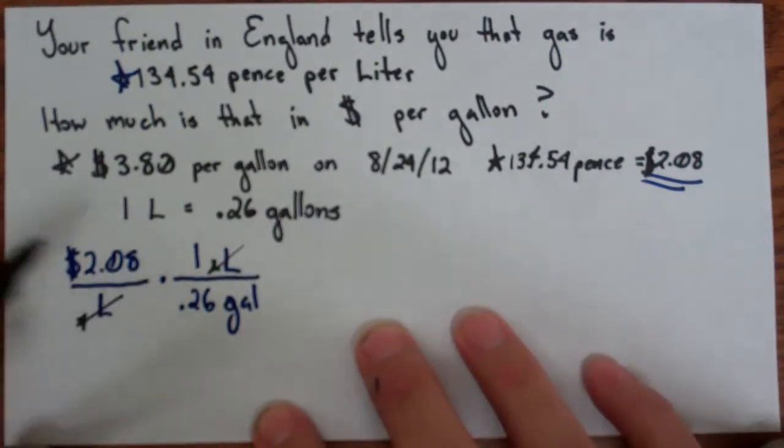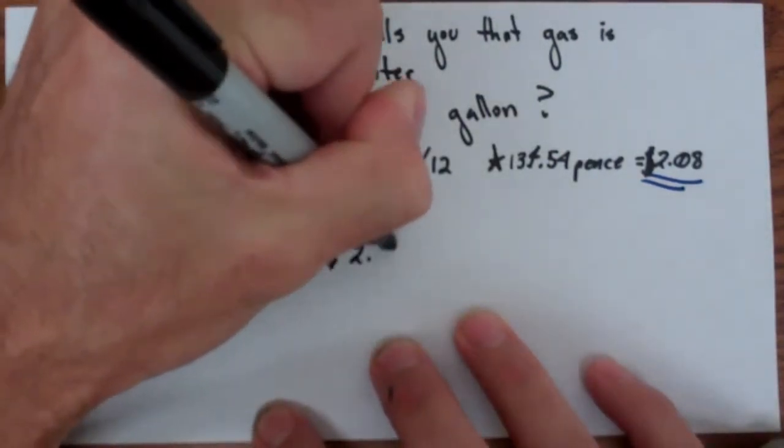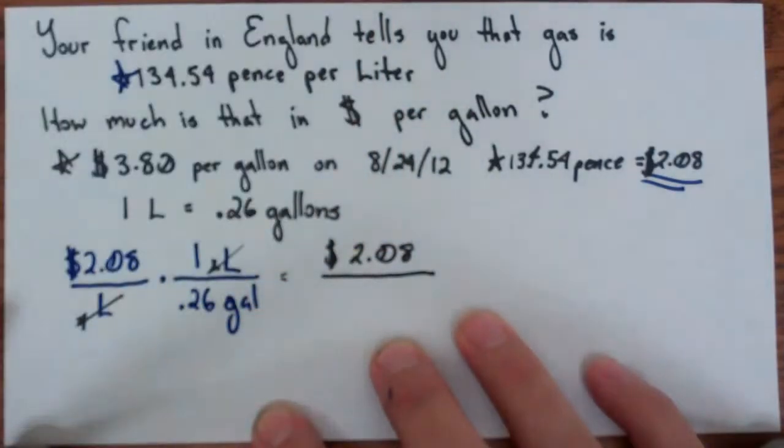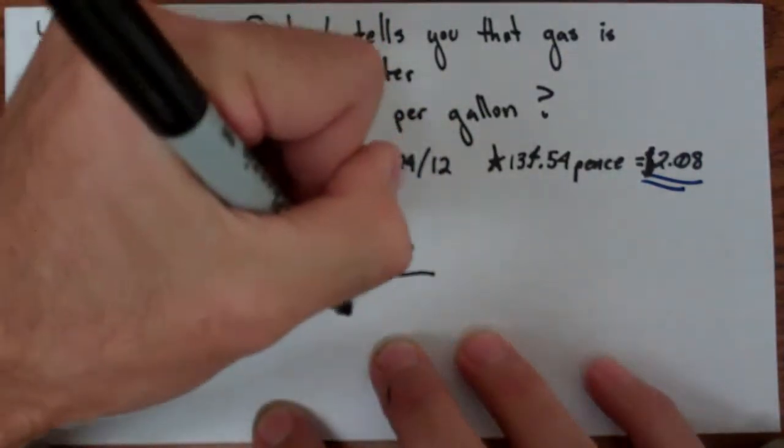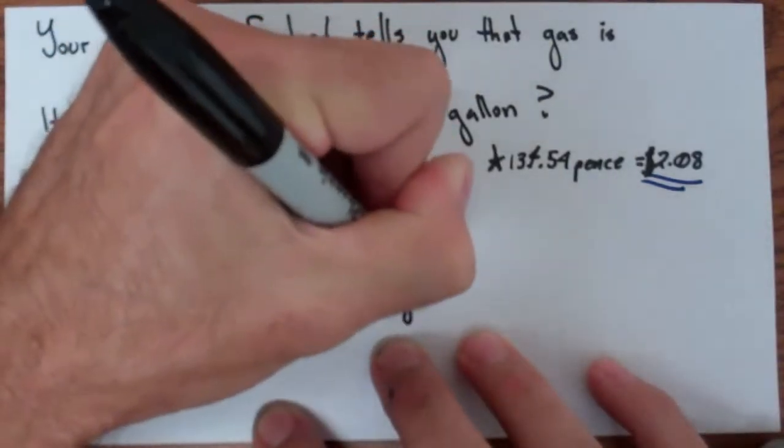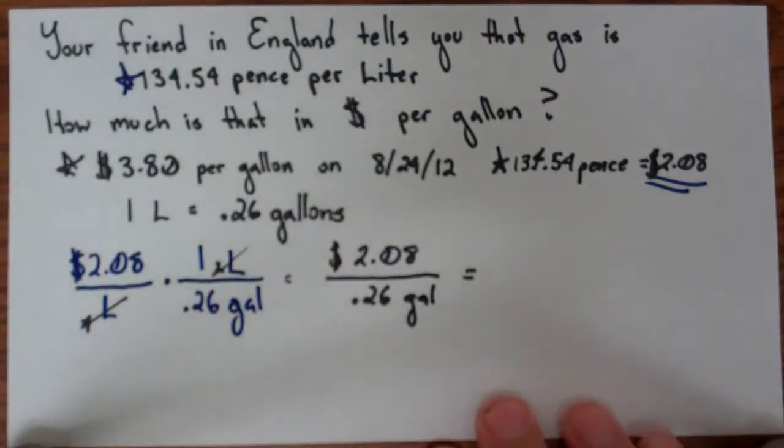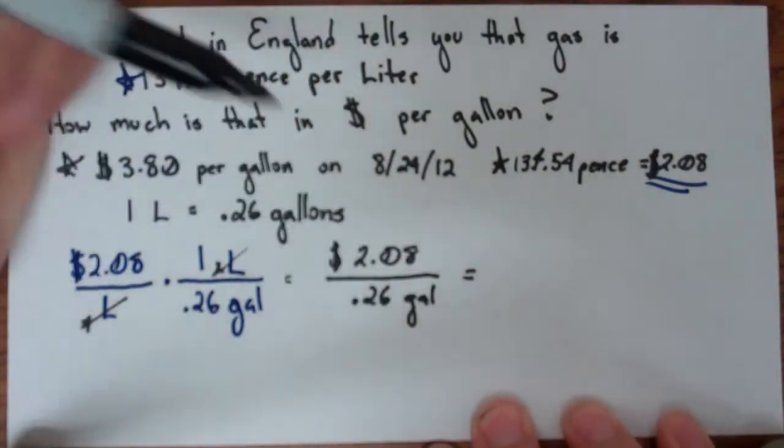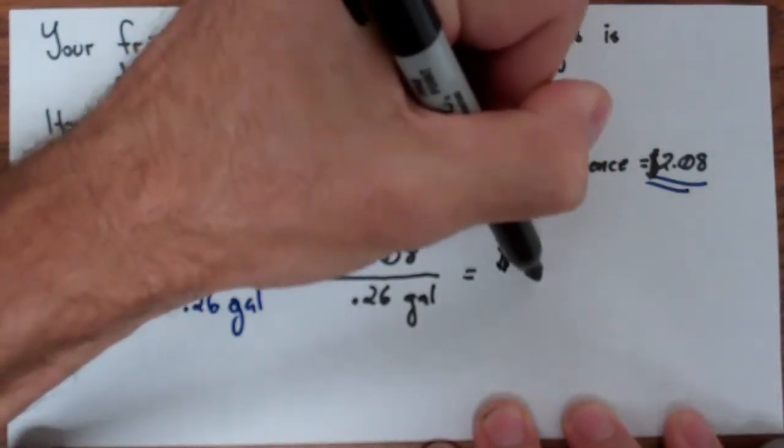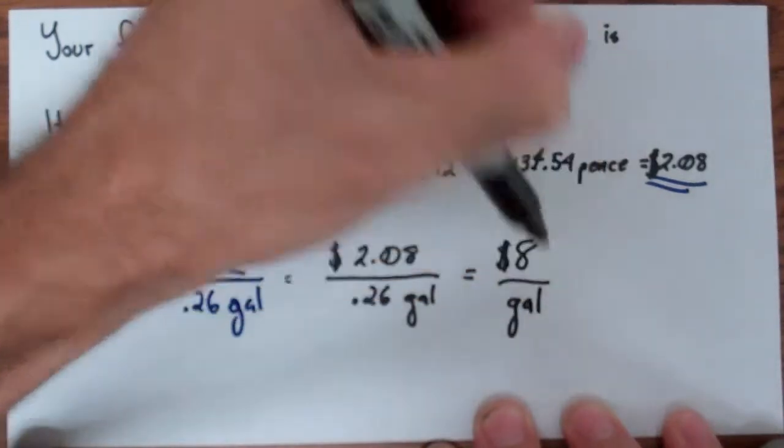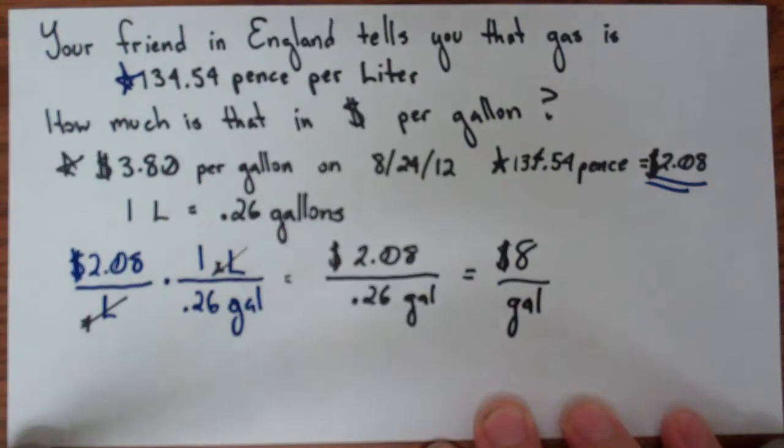So now $2.08 times 1 is going to give you $2.08 all over and then 1 liter times 0.26 gallons is just going to give you 0.26 gallons. Now this is not quite in dollars per gallon. The only way to actually get this in dollars per one gallon is to divide. And so I go over to my handy dandy calculator and if I divide $2.08 by 0.26 gallons I get exactly $8 per gallon because by dividing this by this you make the denominator 1.